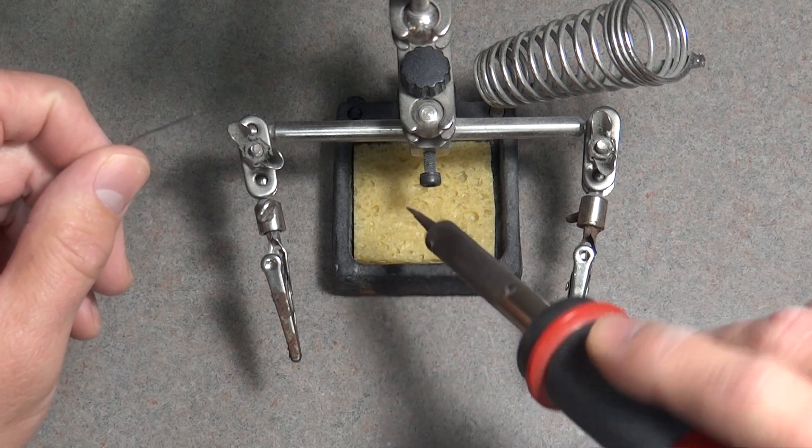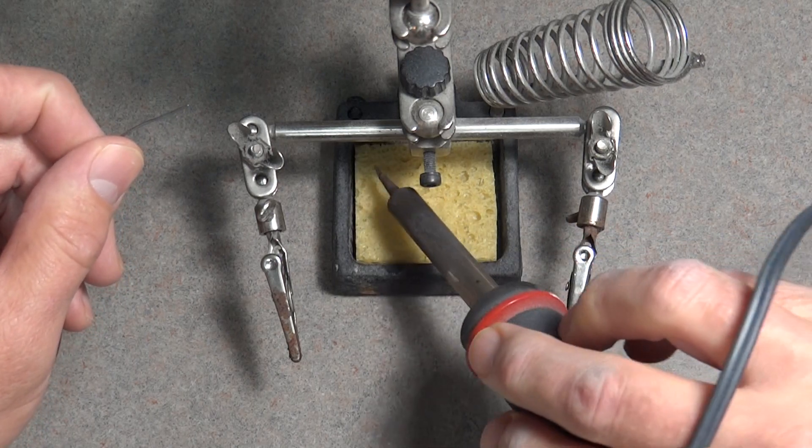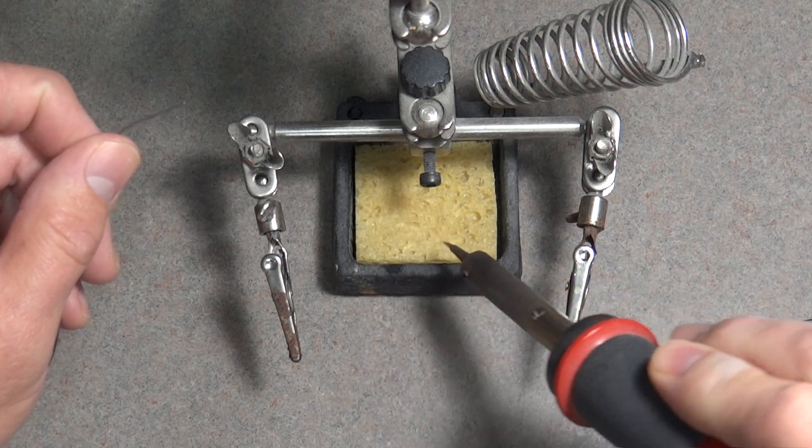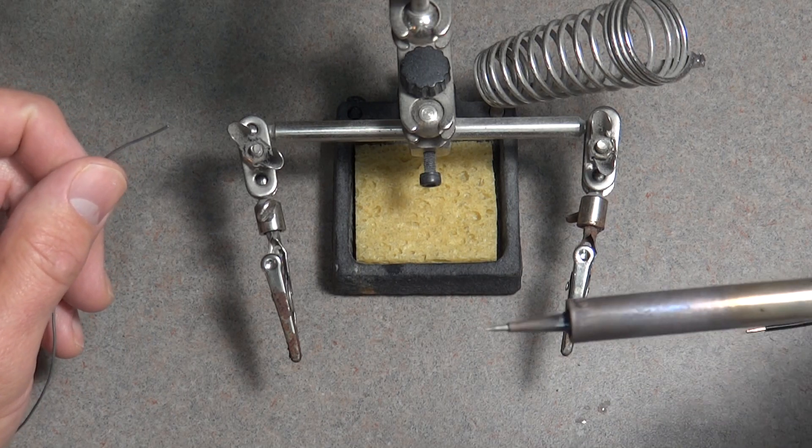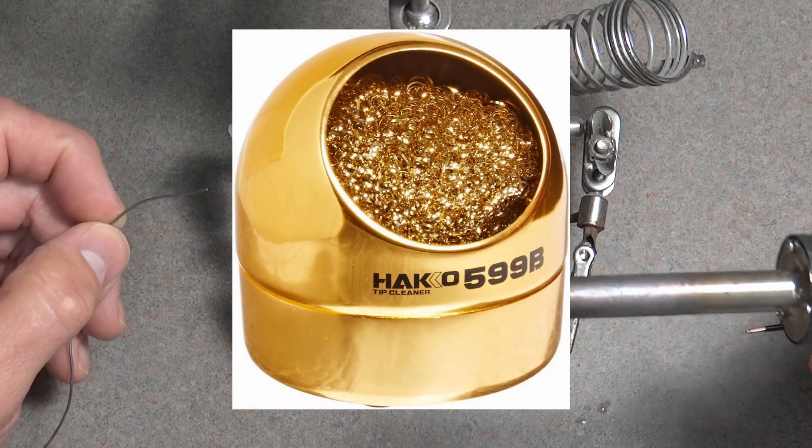Cleaning the tip of the soldering iron can be done one of two ways. The least expensive way, and the one I use, is to use a wet sponge, but there are also other cleaners that are called brass wire sponges.